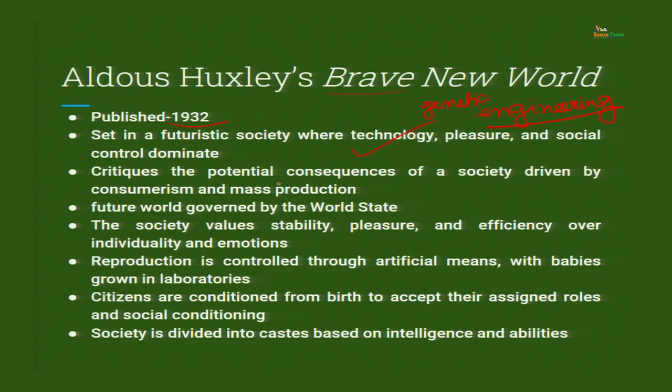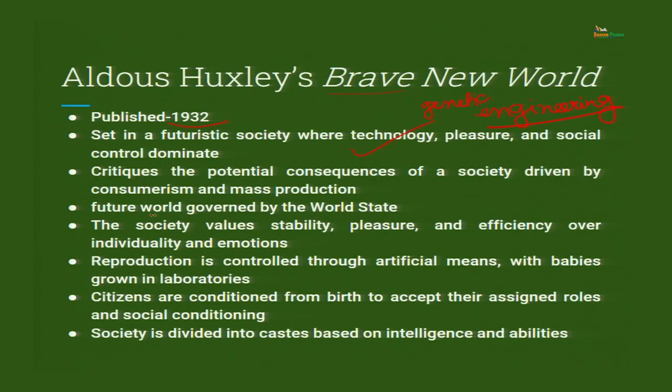Babies are not born naturally in Brave New World — they are produced. Some babies are given the DNA of workers and some are given the DNA of the leaders; according to that, babies are produced and grouped right before their birth. The future world is governed by the 'World State.' The society values stability, pleasure, and efficiency over individuality and emotions — all the very notions of dystopia we were talking about earlier feature in this novel.